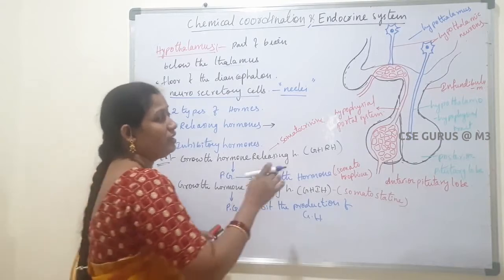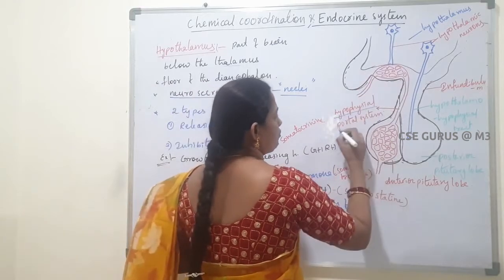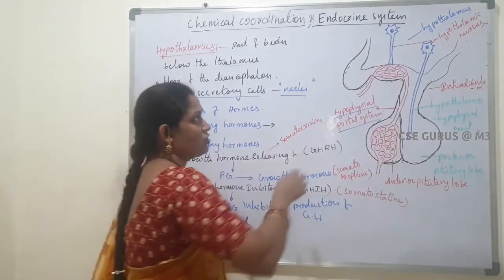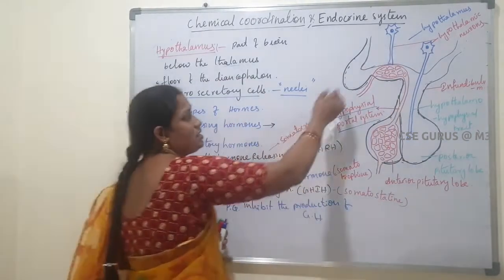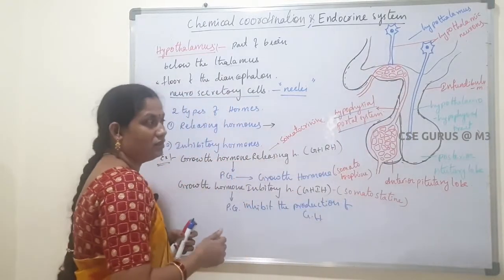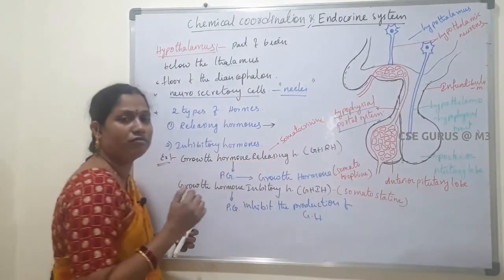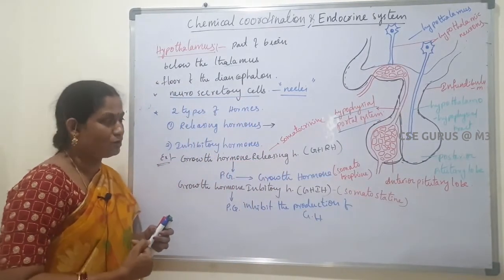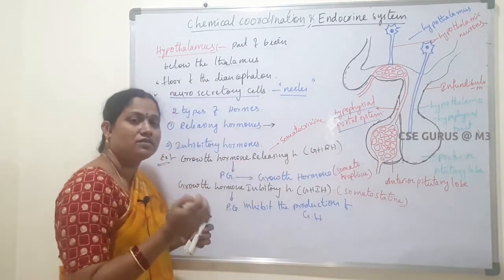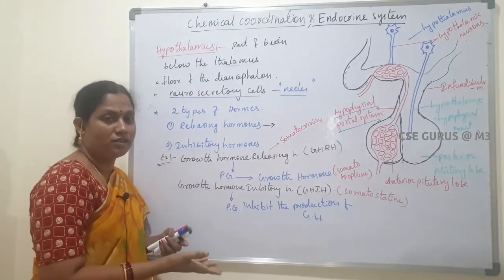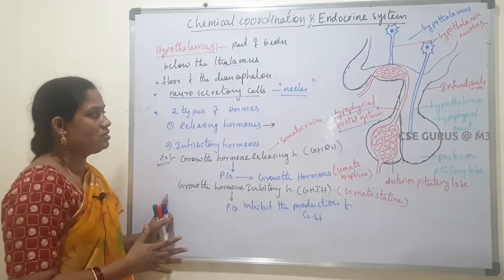These hormones reach the pituitary gland via the hypophysial portal system. The hypothalamic releasing and inhibitory hormones travel through the hypophysial portal system to reach the anterior pituitary gland. As a result, the anterior pituitary gland is stimulated or inhibited in its production of hormones.